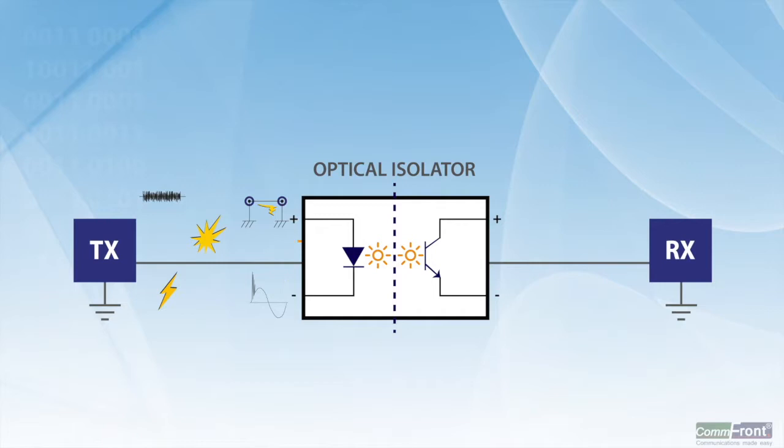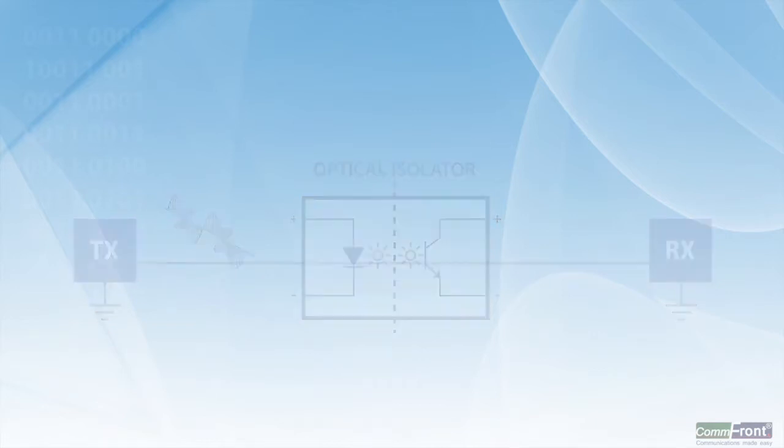Furthermore, because optical isolation uses light to transmit data across the isolation barrier, it also gains the advantage of immunity from electrical and magnetic field interference. This makes optical isolation an effective solution in industrial areas where strong electric or magnetic fields could be present.